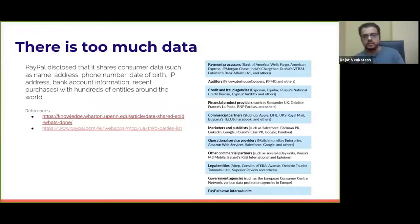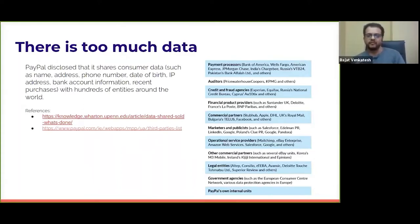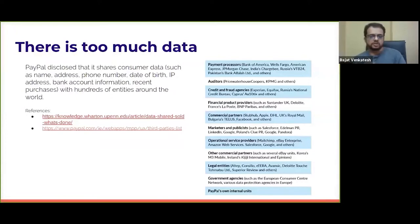The first real problem is that there's too much data. On this slide, you see an example of the data sharing agreements that a company like PayPal has. PayPal exchanges data with a bunch of entities. Some are pretty interesting — marketers, publicists, and operational service providers are on the list of companies that share or have access to PayPal transactions. You might wonder why Amazon Web Services has access to the transactions you made on PayPal. If you have a lot of data and the ability to join different datasets, you don't know what kinds of insights are there. And this trend has continued to grow — more and more data is being generated and shared.